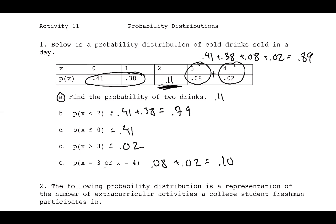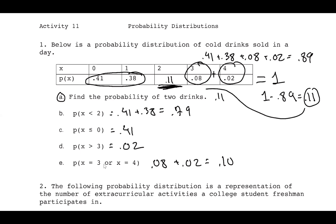To clarify how we found the probability of two: all probabilities must add up to one. The known probabilities sum to 0.89. So 1 − 0.89 = 0.11 gives you P(2) = 0.11.